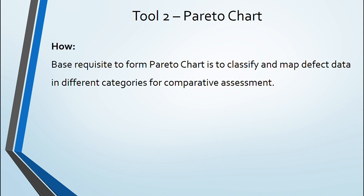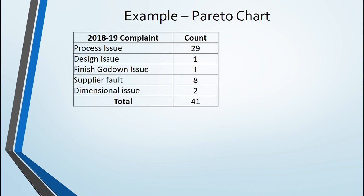Taking an example, an organization complaint for 2018-19 were classified in 5 categories. A total of 41 complaints distributed in 5 categories.